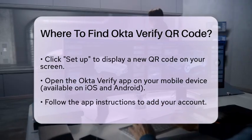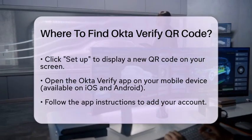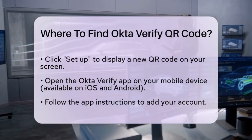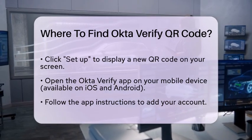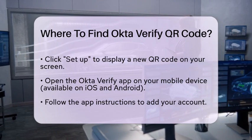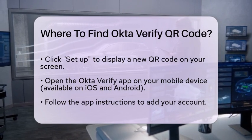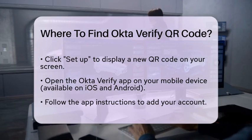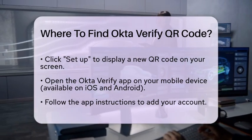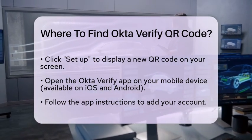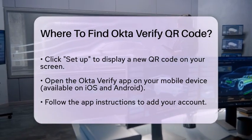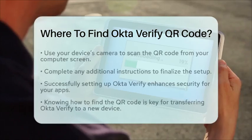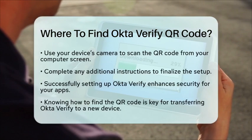This QR code is what you will use to enroll your device with Okta Verify. Now grab your mobile device and open the Okta Verify app. This app is available for both iOS and Android devices. Follow the instructions within the app to add your account, and when prompted, use your device's camera to scan the QR code displayed on your computer screen.